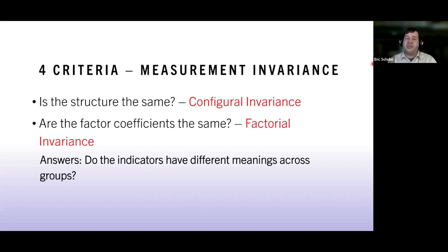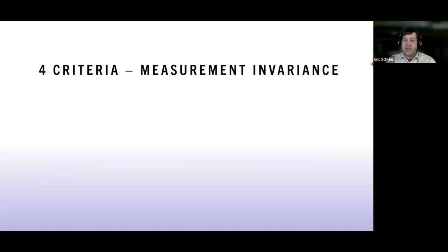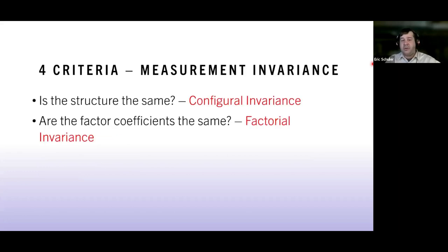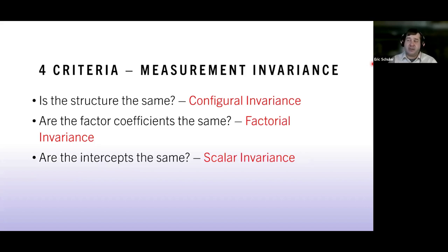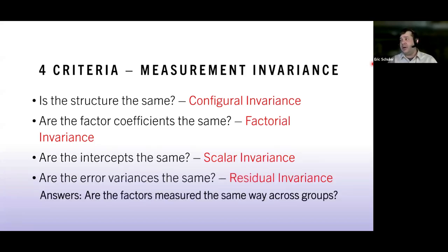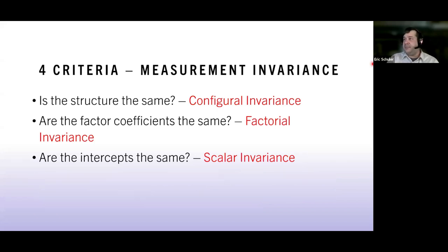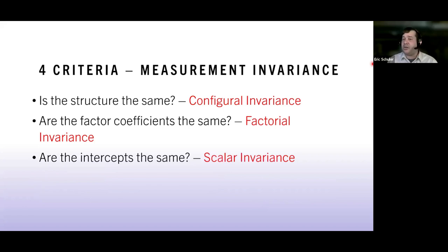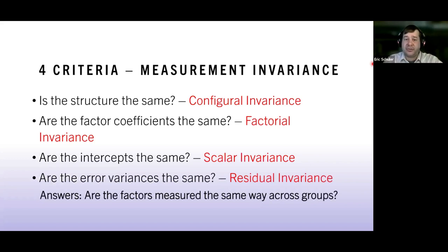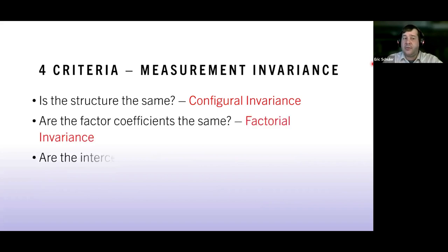Metric/factorial invariance asks: do items have the same meaning across groups, or are different groups interpreting them differently? Scalar invariance asks: do individuals from different groups with the same underlying construct score respond in the same way — same response sets? Finally, strict invariance asks: are the factors being measured with the same degree of precision across groups? There are four different levels, and we test from least to most restrictive.